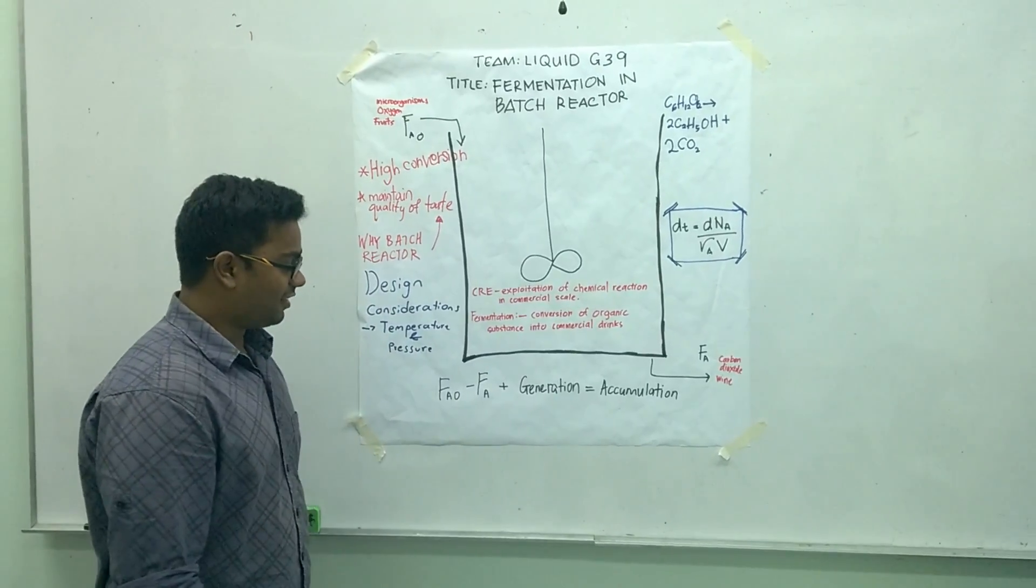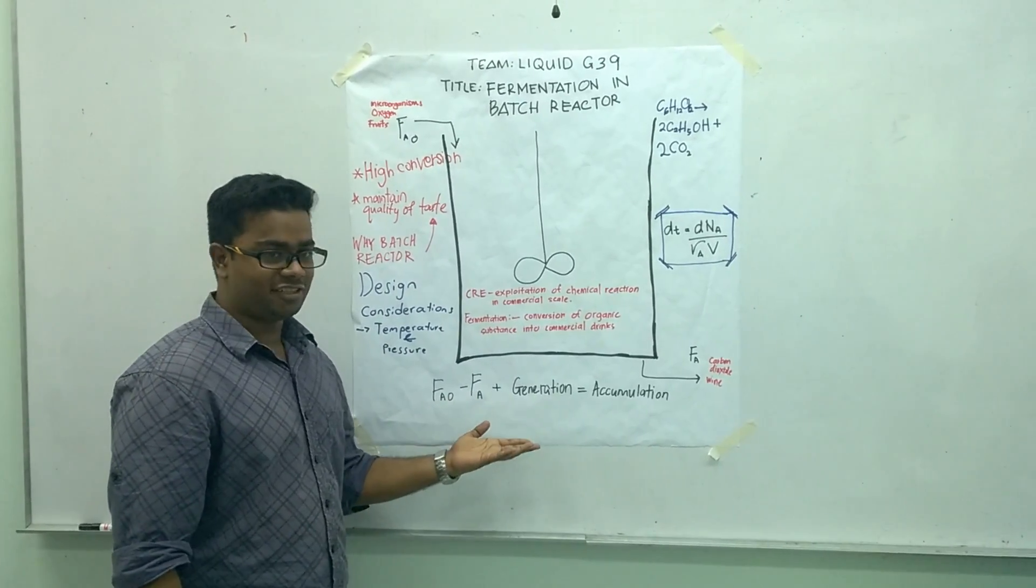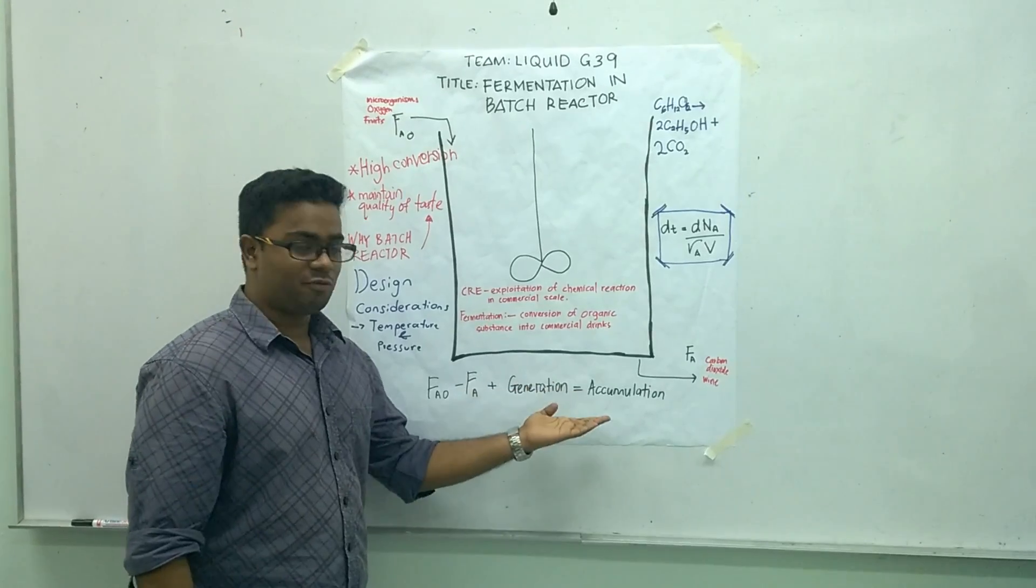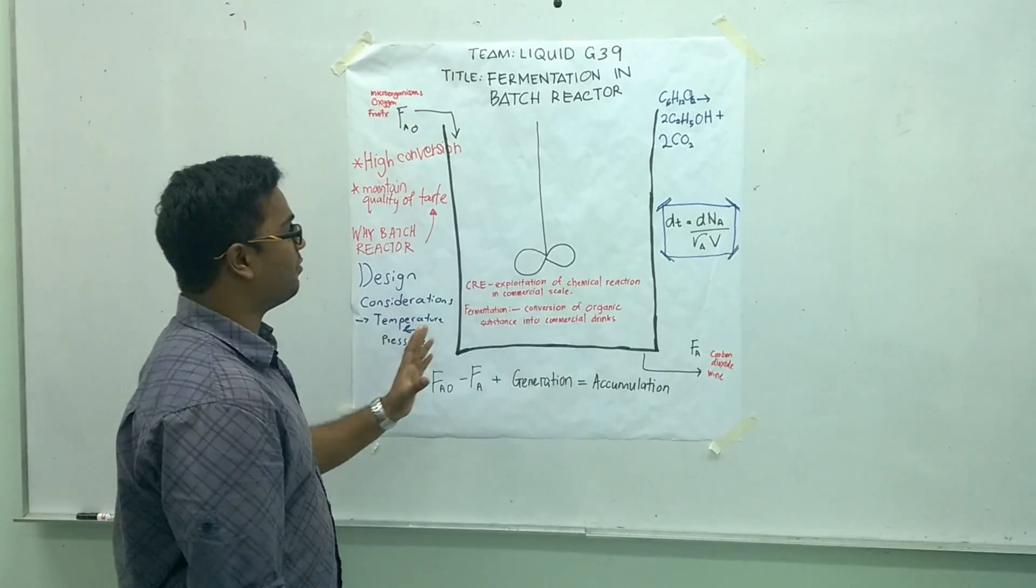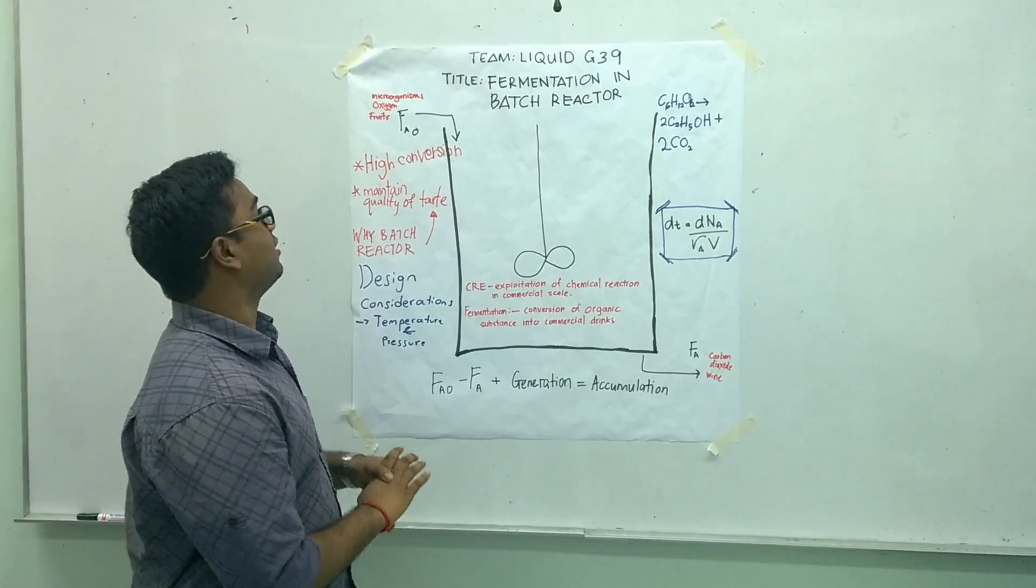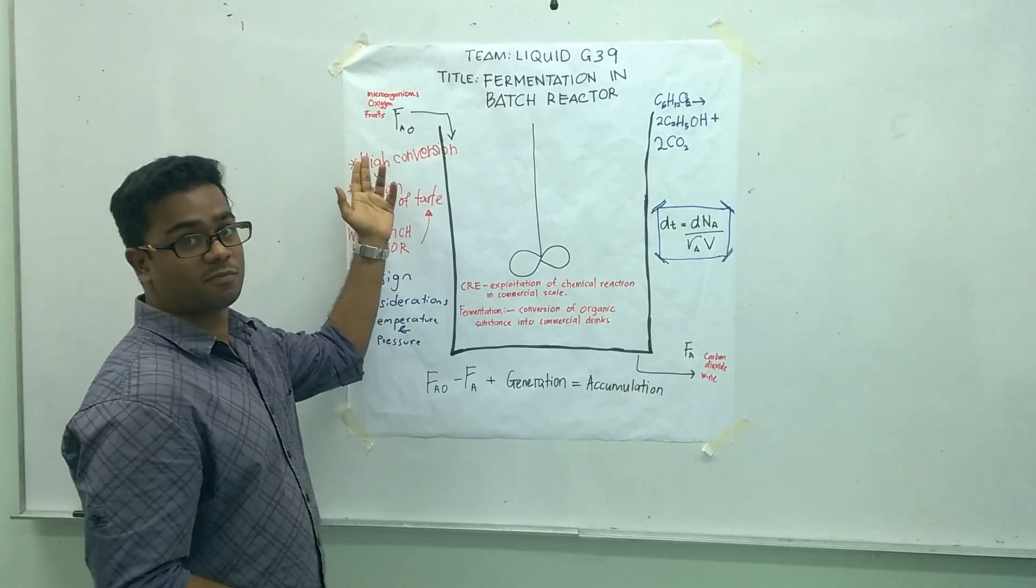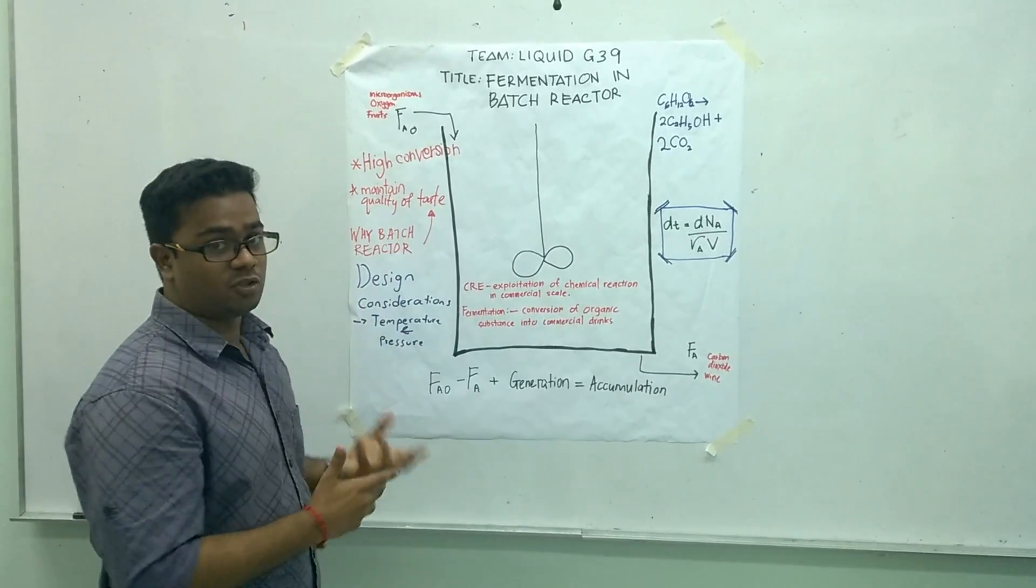Since every reaction requires an input, output, and generation to be equal with the accumulation, for this fermentation, the input is the microorganism, oxygen, and fruits for the fermentation to occur.